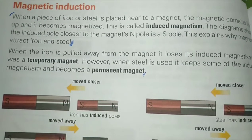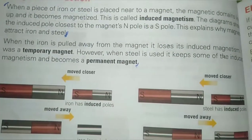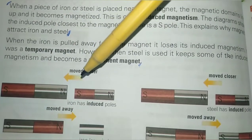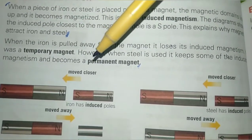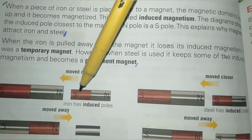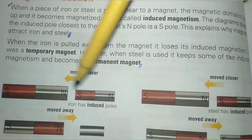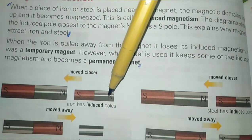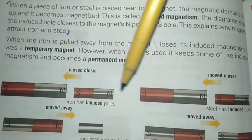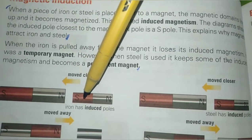Our next topic is magnetic induction. When a piece of iron or steel is placed near a magnet, the magnetic domains line up and it becomes magnetized. This is called induced magnetism. When iron is brought near a permanent magnet, its domains line up and it becomes magnetized. The induced pole closest to the magnetic north pole is a south pole, which is why a magnet attracts iron and steel.